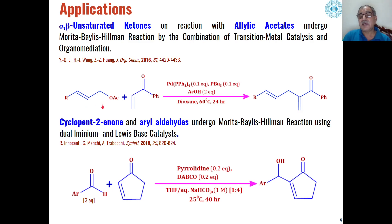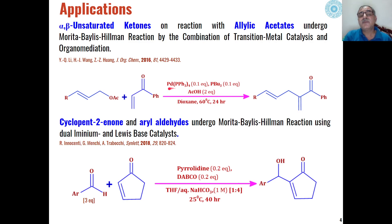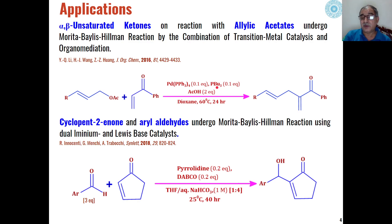Allylic acetates react with alpha-beta unsaturated ketones where the alkene part of the ketone will undergo hydroalkylation with the allylic acetate. Here, instead of tertiary amine, the modified catalysts — triphenylphosphine and palladium tetrakis — are used as catalyst along with tributylphosphine as co-catalyst, and this combination leads to the formation of Baylis-Hillman products.